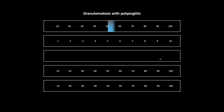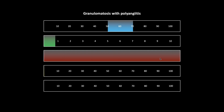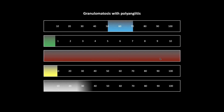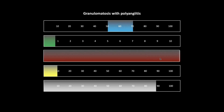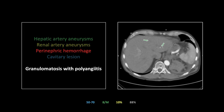Next is granulomatosis with polyangiitis — I still call it Wegener's. This is most common in men between 50 and 70. The incidence is a fortunately low eight per million. Interestingly, no risk factors have been identified — there is no known genetic, hereditary, or environmental association. Mortality is about 10 percent even when treated, and CT sensitivity is about 88 percent, usually for secondary complications of the polyangiitis.